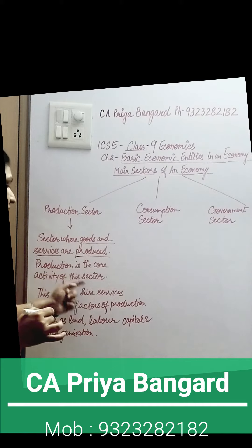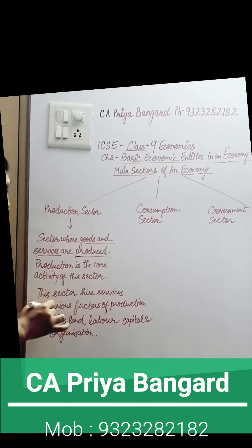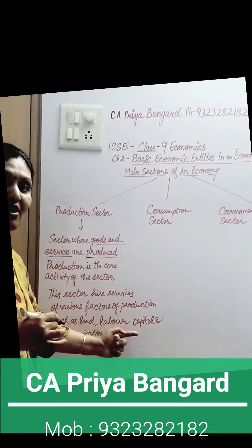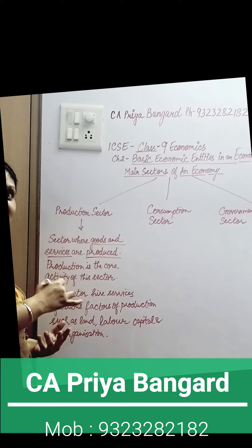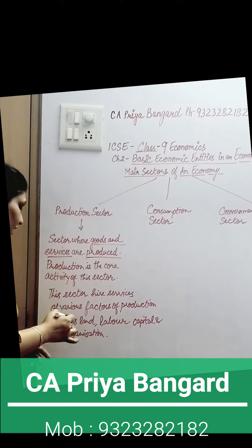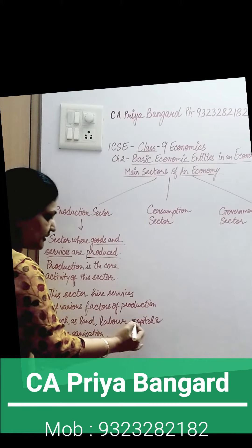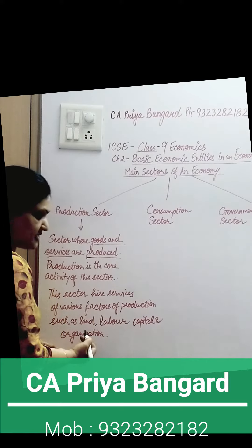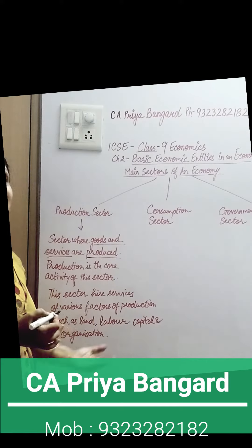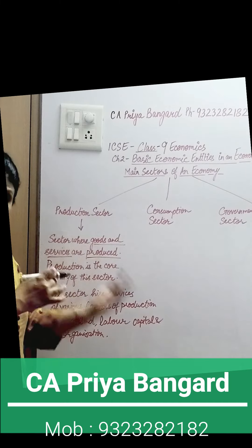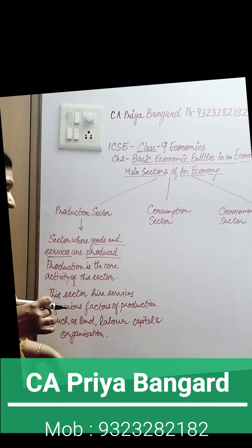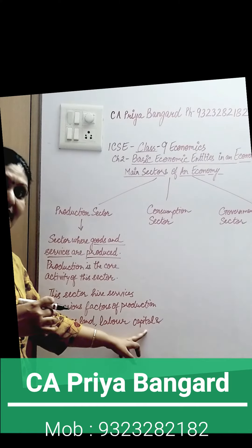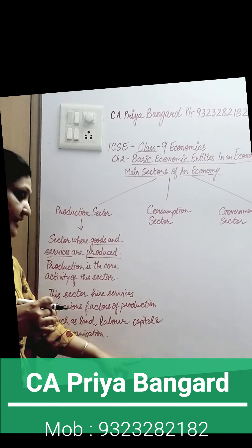This sector hires services of various factors of production. What are the factors of production? Land, labor, capital, and organization. You hire land. What does land get? Rent. What does labor get? Wages. What does capital get? Interest.